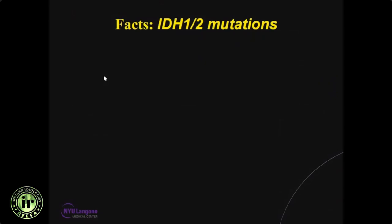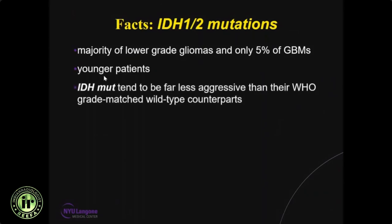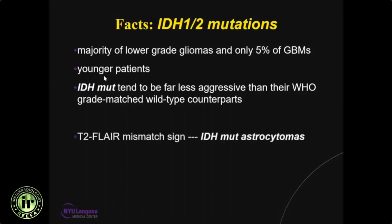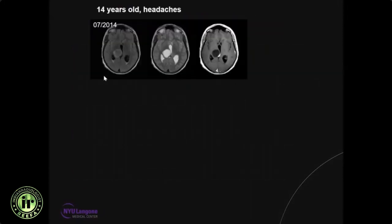A few facts about IDH1 and tumor mutations: Majority of lower-grade gliomas and only 5% of primary GBMs have IDH mutation. IDH mutation is seen more commonly in younger patients. IDH-mutated tumors tend to be far less aggressive than their IDH wild-type grade-matched counterparts. The T2-FLAIR mismatch sign has almost 100% positive predictive value or specificity for IDH-mutated astrocytomas, but is only seen in about 15–20% of cases. IDH-mutated tumors have a preference for the frontal lobe — majority of frontal lobe tumors are IDH mutated, especially in younger patients.